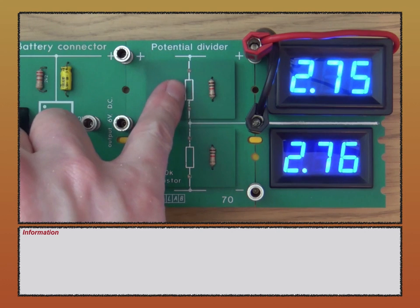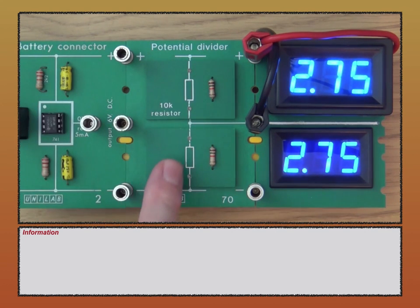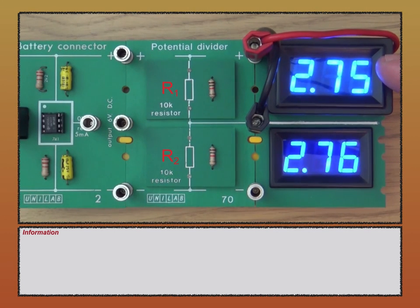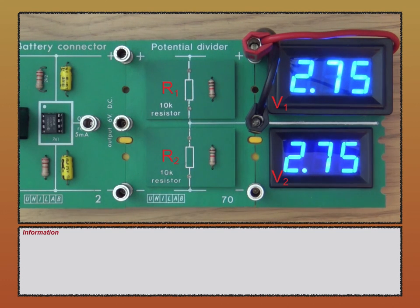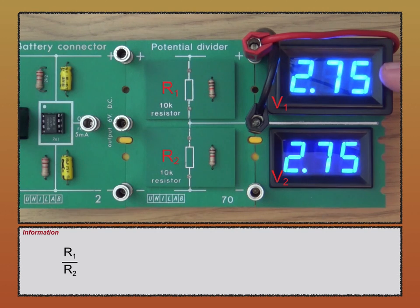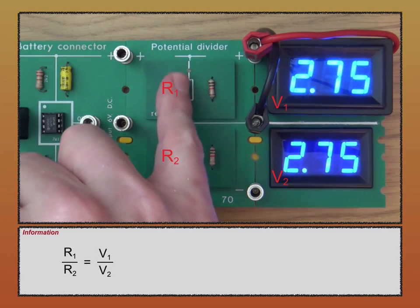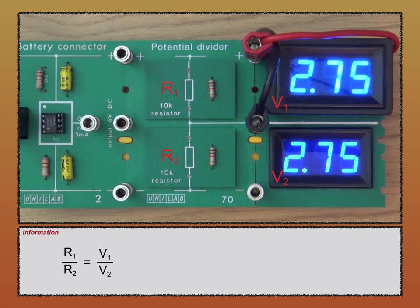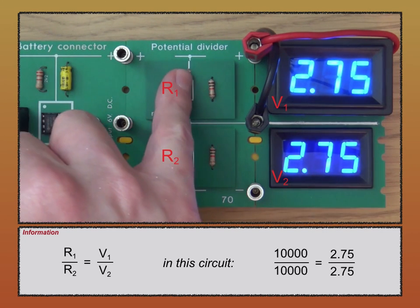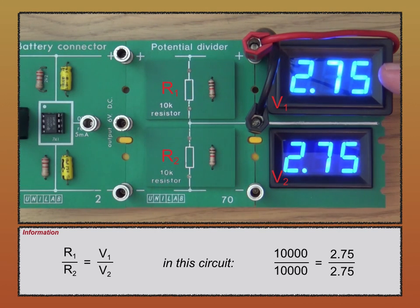If I call the top resistance R1 and the bottom resistance R2, and the voltage across R1 as V1 and the bottom voltage as V2, then the relationship between these values is that R1 over R2 is equal to V1 over V2. Since both resistors are 10k, the voltages are the same as well — and of course both voltages add up to the supply voltage.